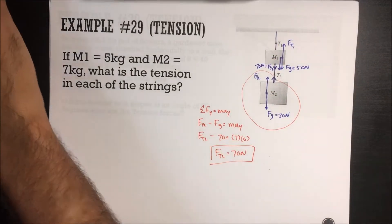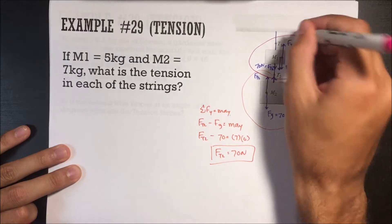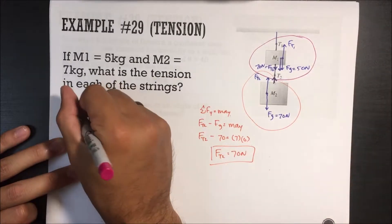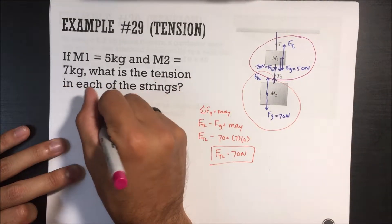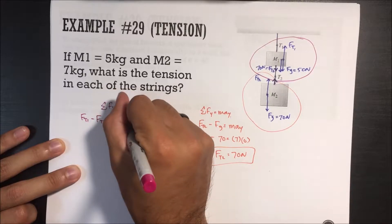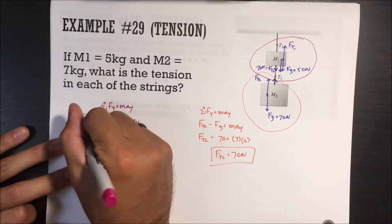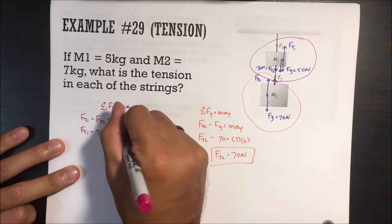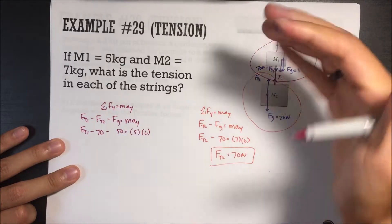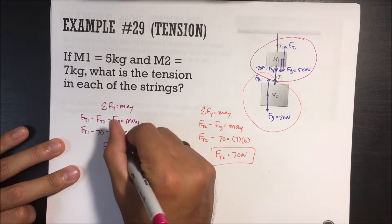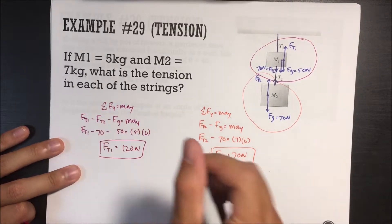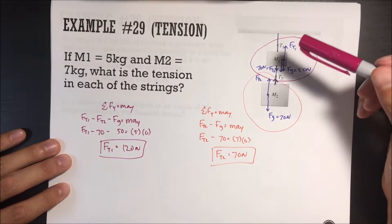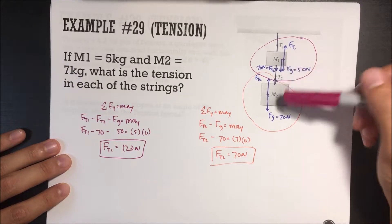Now for tension 1, we look at the free body diagram of the top mass: sum of all forces in y equals mass times acceleration in y. We have three forces: force of tension 1 going up, force of tension 2 going down, and force of gravity going down. Force of tension 1 minus 70 minus 50 equals mass times 0. So force of tension 1 equals 120 newtons. Another way to see this: the top string is carrying both masses — 50 newtons plus 70 newtons equals 120 newtons.